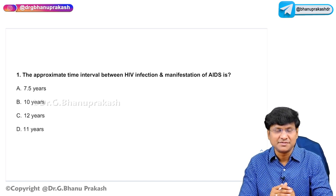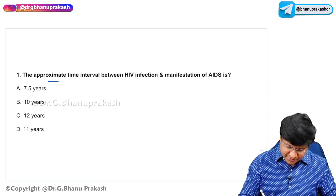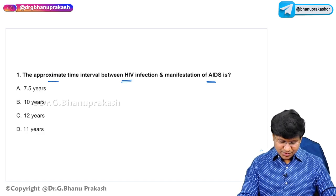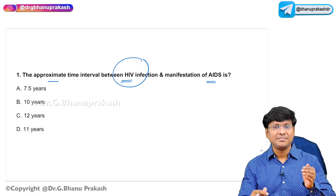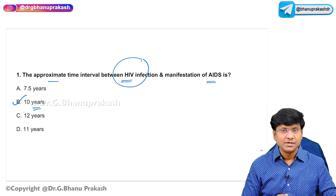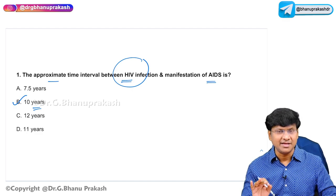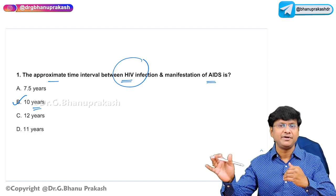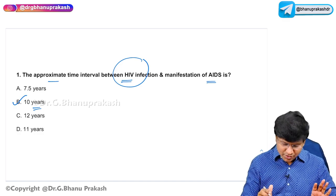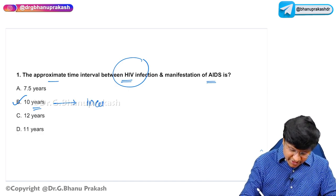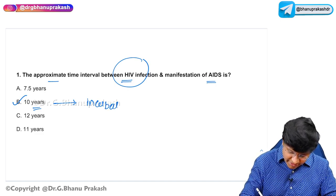The first question: the approximate time interval between HIV infection and manifestation of AIDS is — 7.5 years, 10 years, 12 years, or 11 years? From the time the organism enters the body, the onset of full-blown AIDS takes 10 years, provided the individual is not taking any treatment or antiretroviral therapy. This time interval is considered the incubation period for development of full-blown AIDS.